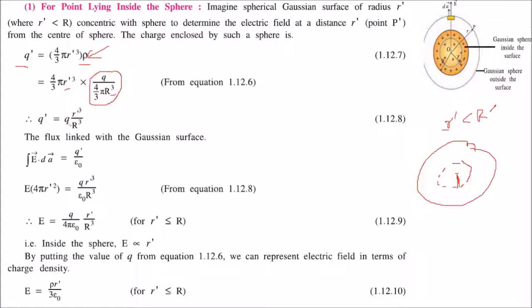By Gauss's law, the electric flux ∫E·dA equals q'/ε₀, where q' is the charge enclosed. Because of symmetry, E will be constant at all points on the Gaussian surface.